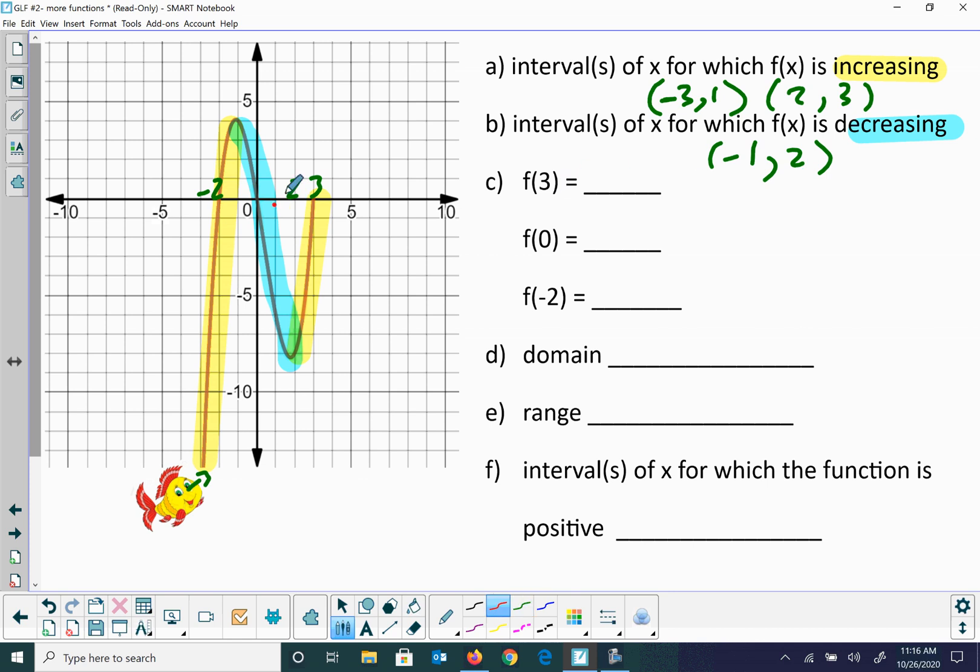We want to find f(3), so we're going to count over one, two, three, so we're going to be right there. f(3) looks like it's going to be at zero - that's my y answer. f(0) is right there, so we're going to be at zero, and f(-2) is going to be right there, and that's also going to be zero. All those happen to be zero, and that happens to be where it crosses the x-axis with our graph.